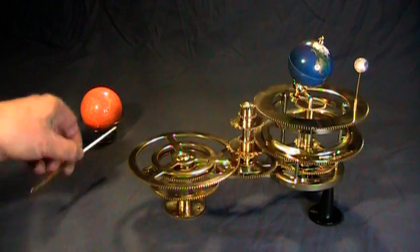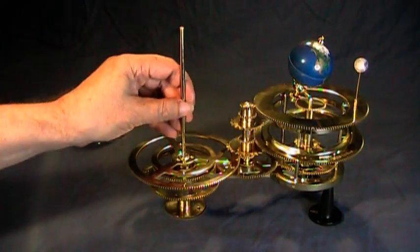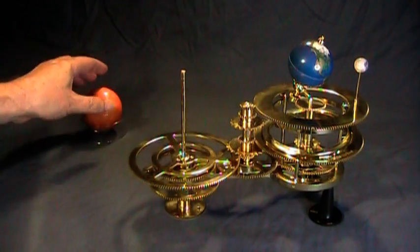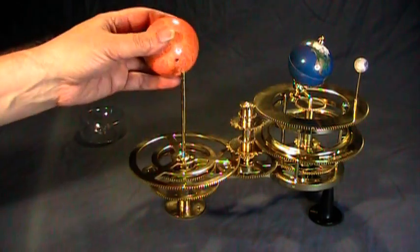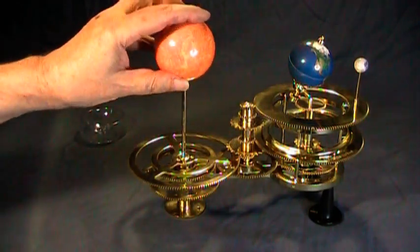Now if you like, you can replace the central shaft into the model and replace the temporary sun. This step isn't really necessary if you're going to continue on with the assembly.